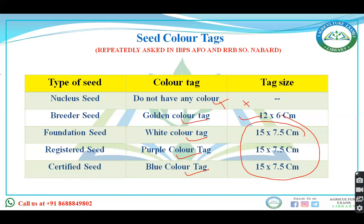Certified seed has a blue tag and is a progeny of foundation seed or registered seed. It is commercially distributed to farmers. Genetic purity is 99% and physical purity is 98%. Apart from these, there are two more types: orthodox seeds, which remain viable at low temperature and low moisture (like cereals), and recalcitrant seeds, which do not remain viable at low temperature and low moisture (like mango and coconut).